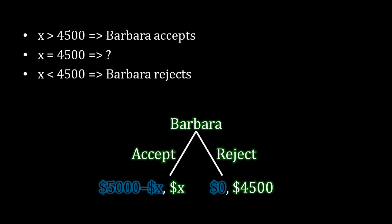In the previous lecture, we supposed that in this case where Barbara is indifferent between accepting and rejecting, she accepts. But again, indifference is indifference. She could very well do anything when x is exactly equal to $4,500. And so now we're going to investigate this here.